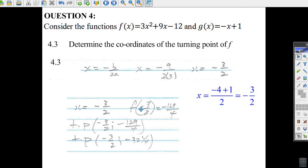Just take minus 3 halves and put it back into the formula in your calculator. 3 times minus 3 halves squared plus 9 times minus 3 halves. Press equals on your calculator, and you get minus 129 over 4, or minus 32 and a quarter.